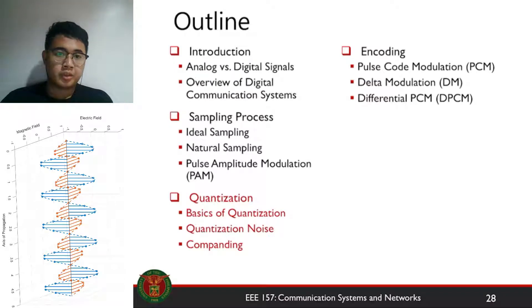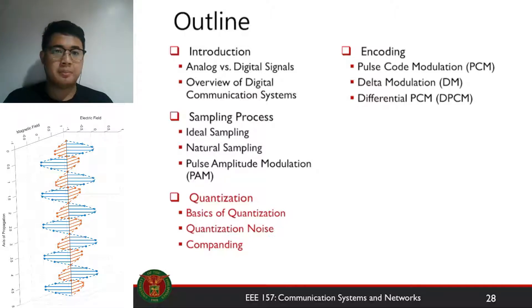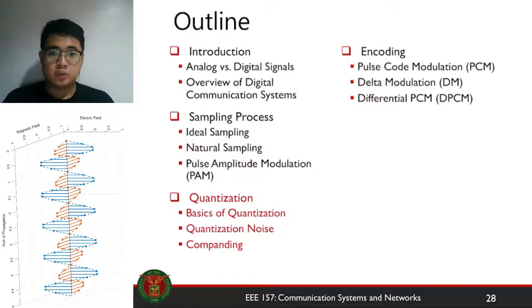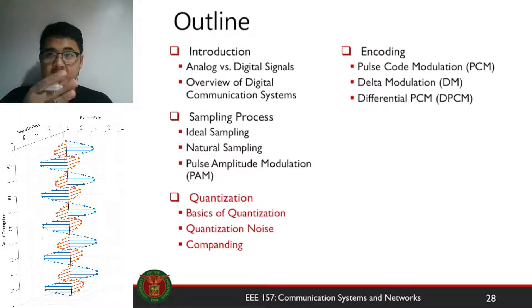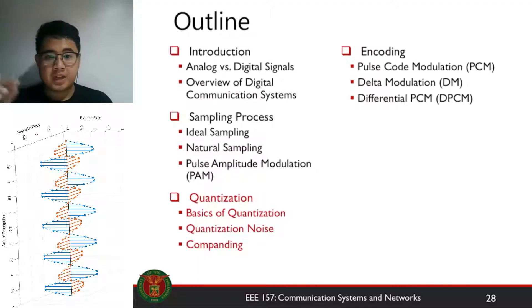Welcome to the third part of week 8, EEE 157, Communication Systems and Networks. In the previous part of the lecture, we talked about sampling, which is the process to discretize analog signals by sampling it in time. So this is discretizing the time element of your analog signals. For this part of the lecture, we will be talking about quantization.